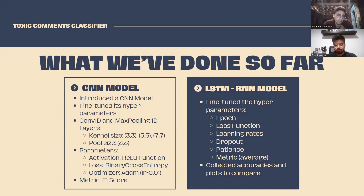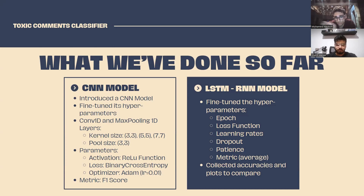After implementing the CNN model, we fine-tuned the hyperparameters of the LSTM model. We modified the epoch count, loss function, learning rates, dropout rates, and the patience of the early stopping. We also changed the averaging method for the F1 score metric from macro to micro, and collected different accuracy values and plots for comparison. CNN model 1 is the first model introduced in the source code without any tuning. CNN models 2, 3, and 4 are the output plots after fine-tuning the originally introduced CNN model. We also ran predictions on the CNN model without hyperparameter tuning and recorded those results.